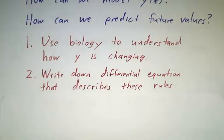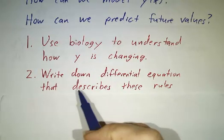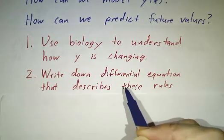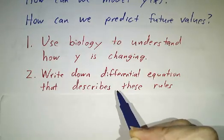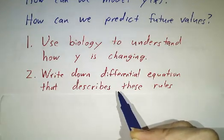And then you need to write down a differential equation that tells you the rate of change in the number of fire ants is some function of time and the number of fire ants and whatever other parameters you put into the system.